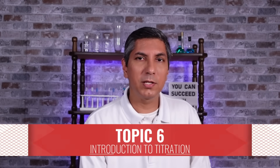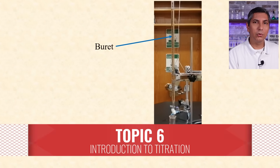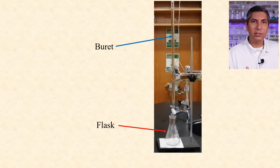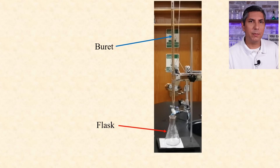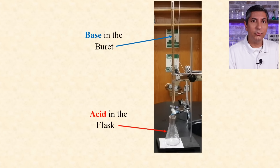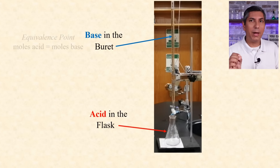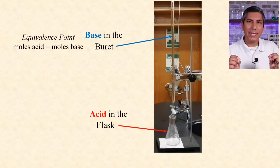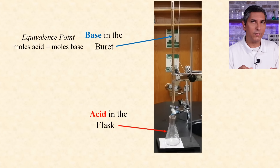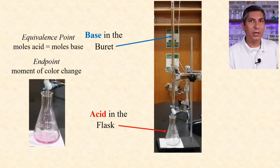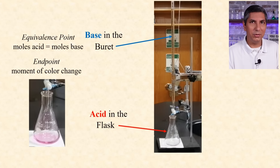Titrations are laboratory experiments where we use a burette to slowly add a solution to a flask of a different solution. We keep adding the solution until something indicates a reaction has taken place. The most common form of titration in AP Chemistry is the acid-base titration. We usually place the base in the burette and the acid goes in the flask below, and we use an acid-base indicator to signal that the reaction is essentially complete. The exact moment where the moles of base added from the burette equals the moles of acid in the flask is called the equivalence point. The moment the acid-base indicator changes color is called the end point, and if you're doing your job right, the end point will be very close to the equivalence point.